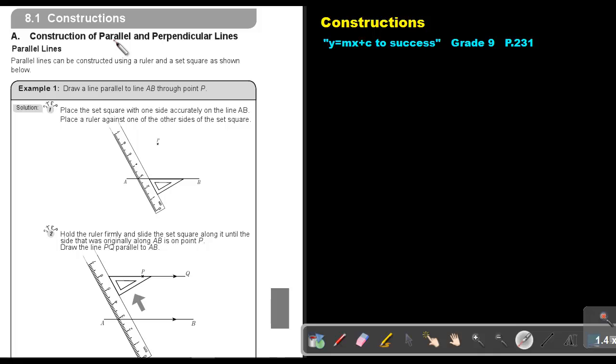Construction of parallel and perpendicular lines. Parallel lines. Parallel lines can be constructed using a ruler and a set square as shown below. Draw a line parallel to line AB through point B.